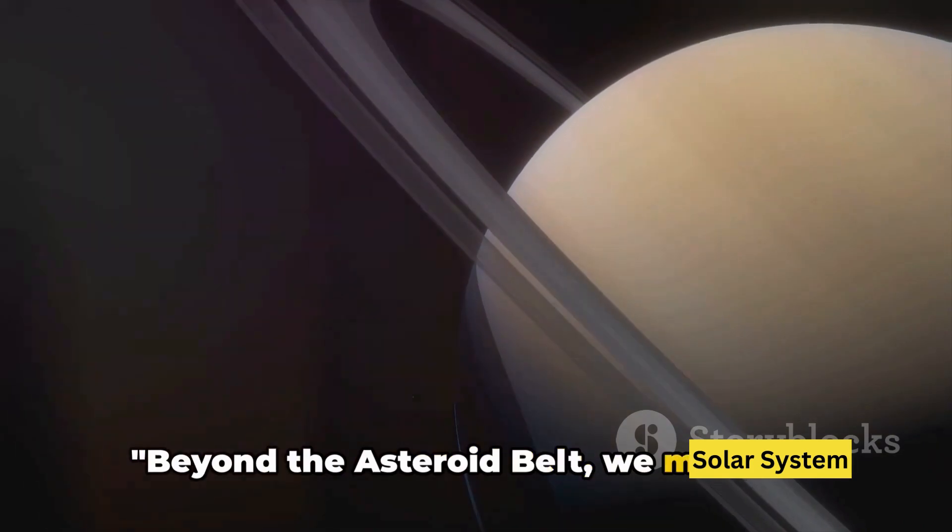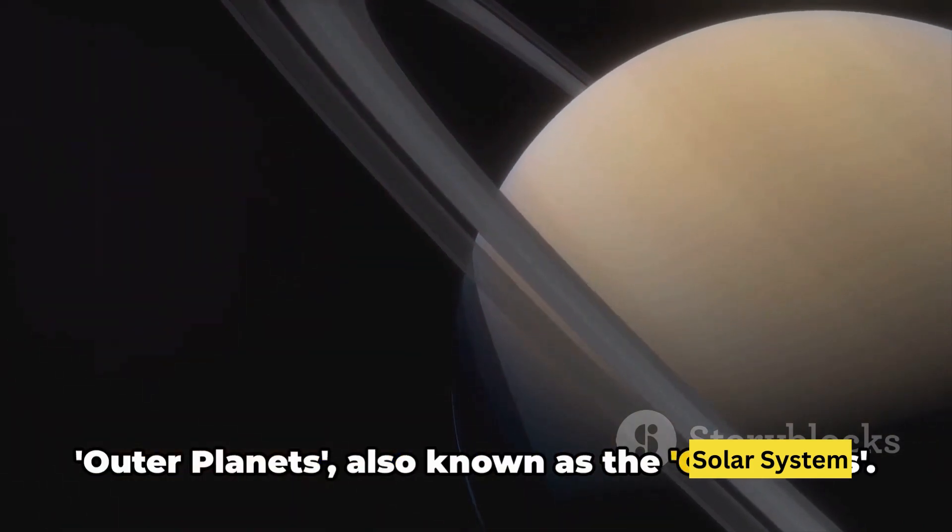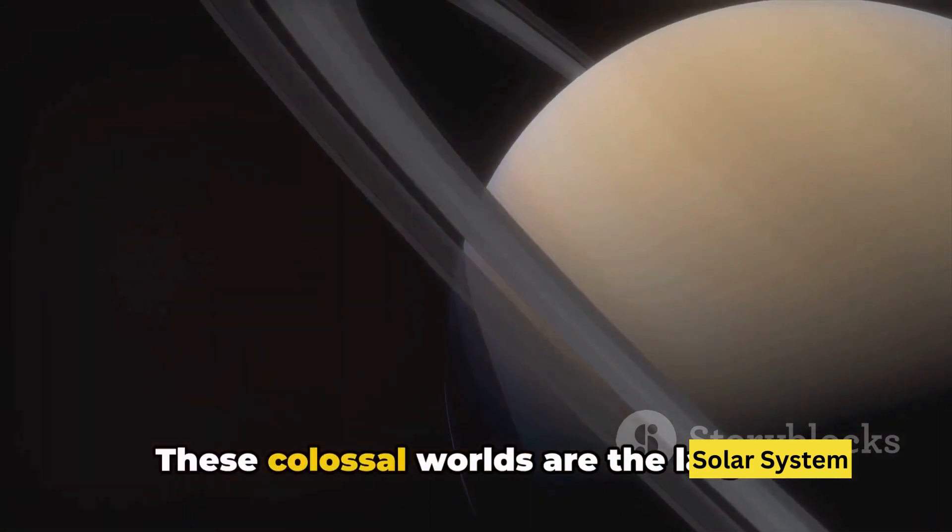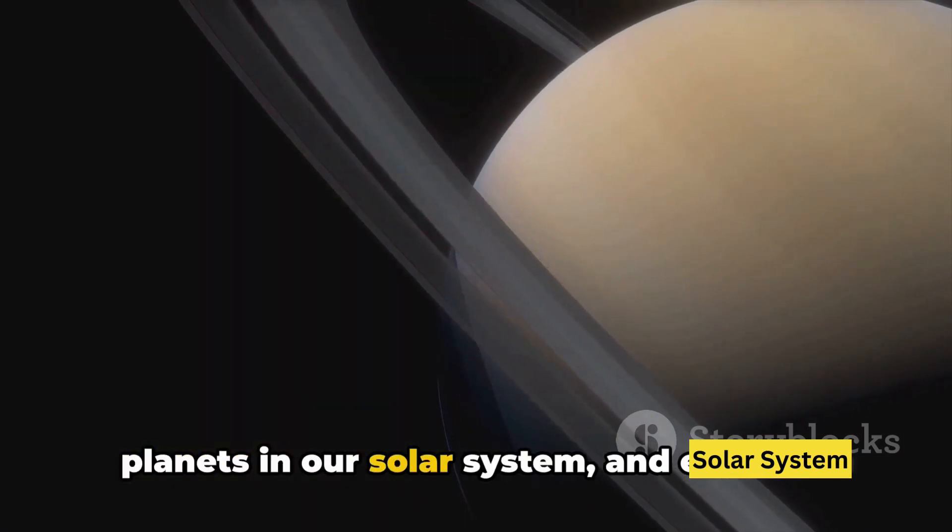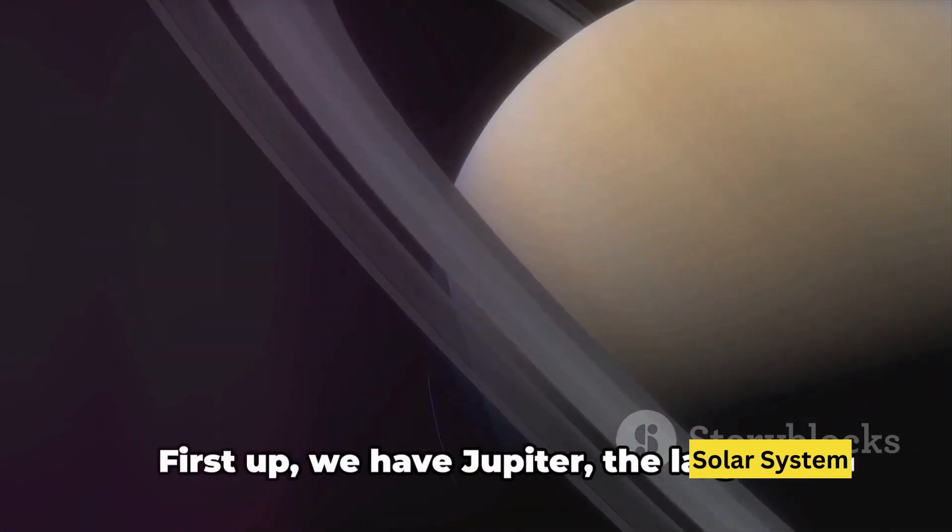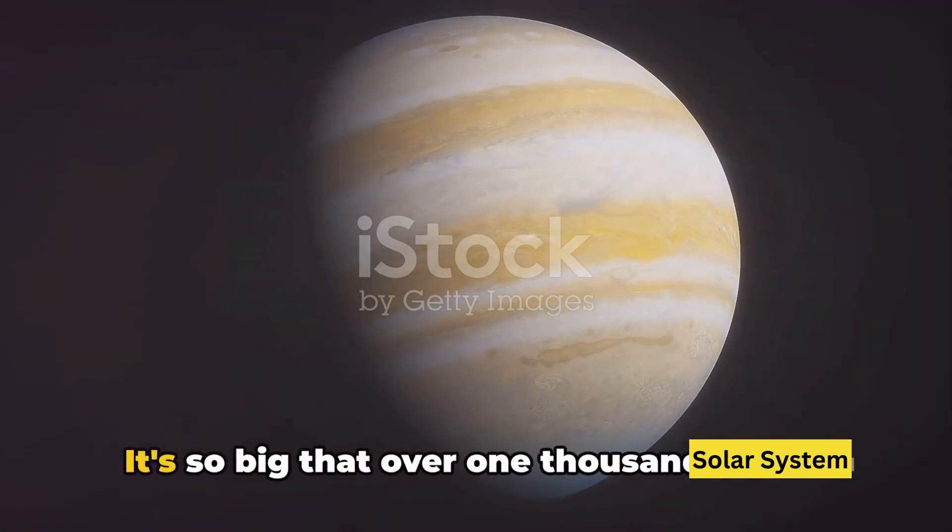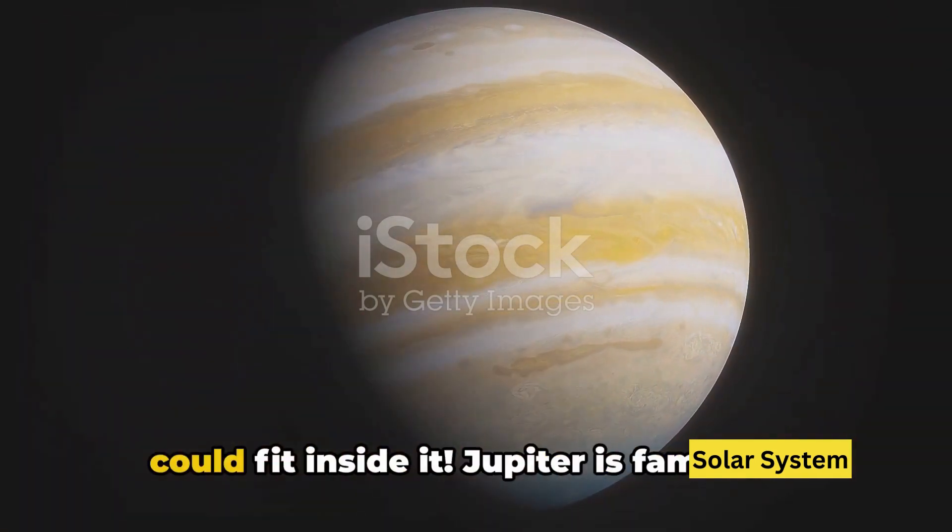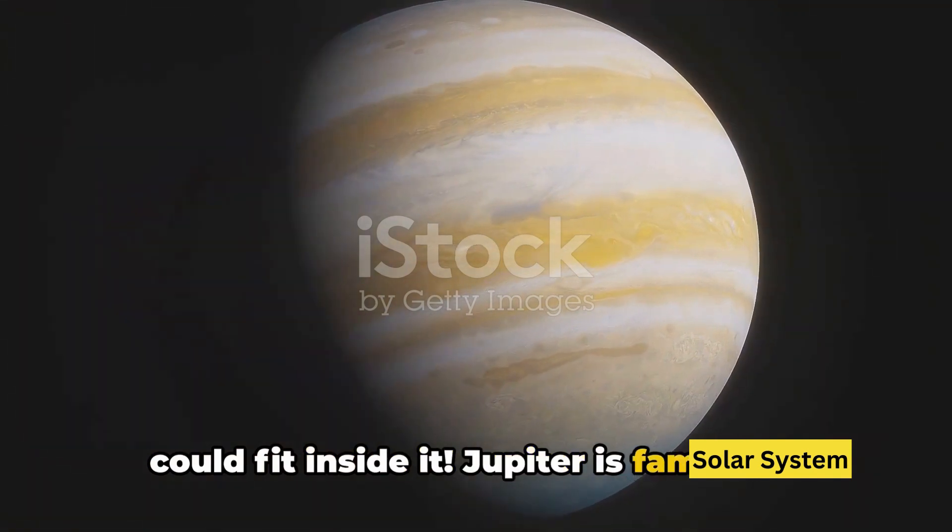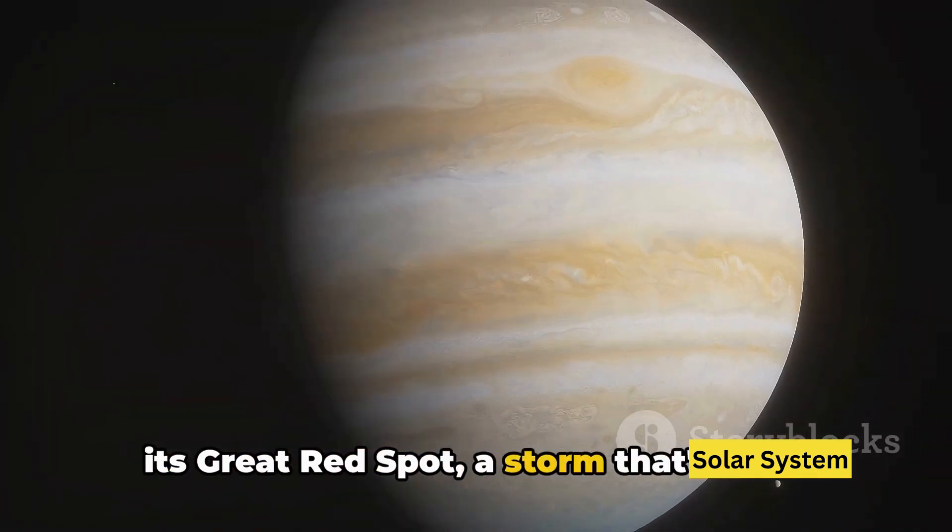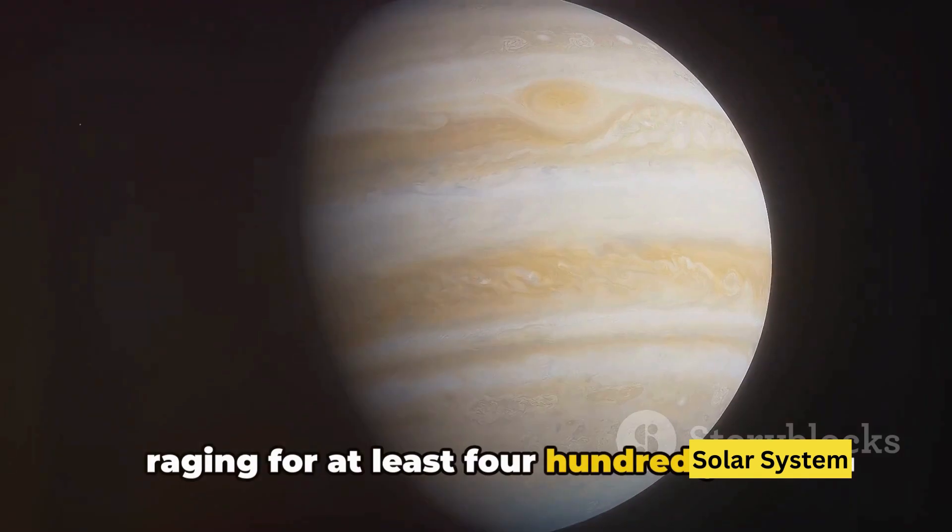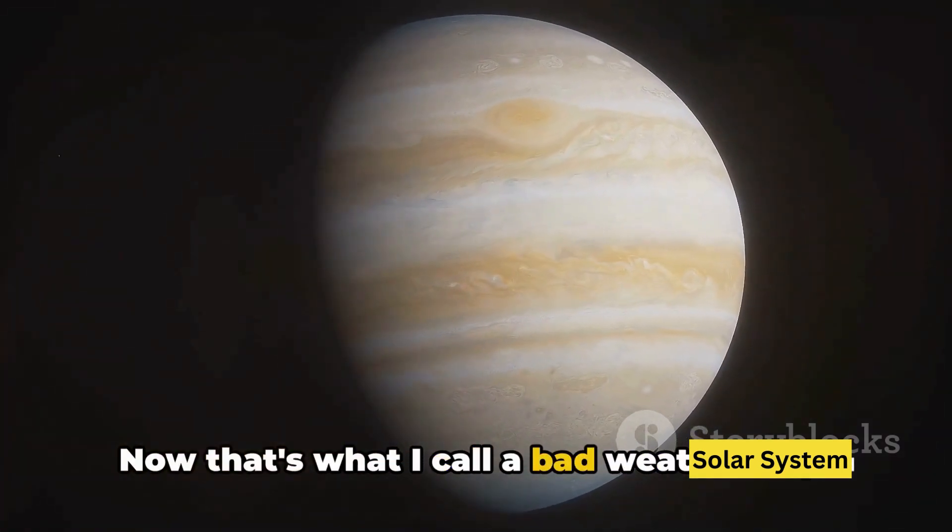Beyond the asteroid belt we meet the outer planets also known as the gas giants. These colossal worlds are the largest planets in our solar system and each is a marvel in its own right. First up, we have Jupiter, the largest planet in our solar system. It's so big that over 1,000 Earths could fit inside it. Jupiter is famed for its great red spot, a storm that's been raging for at least 400 years. Now that's what I call a bad weather day.